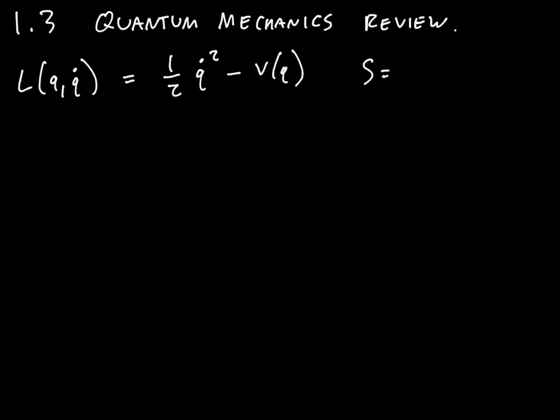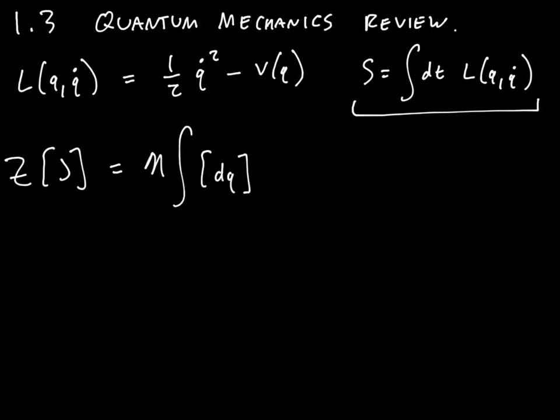And then you took this and you stuck it into an action, so the action was the integral of the Lagrangian. And then you inserted this action s into a path integral to define a giant object called the generating functional. So that's a functional of the applied sources. Let me just remind you what this was. This thing looks like: integral dq times the exponential of i s of q plus i integral d t j of t q of t.